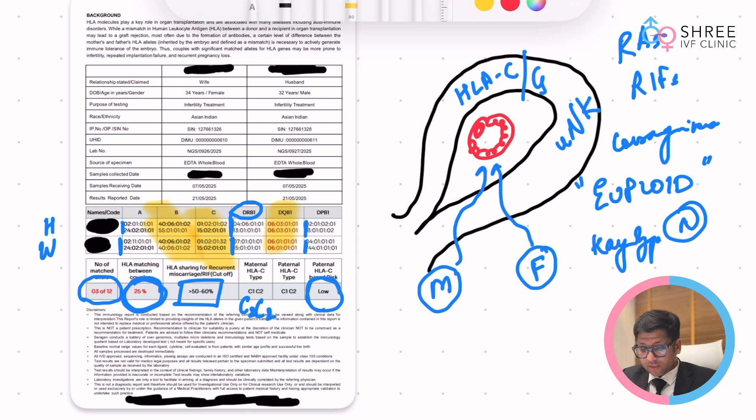Very important for you to understand this. As I told, this is an expensive test. Every day we will have consultations regarding the HLA typing report. What do you do when the report is abnormal? Let's assume instead of 25% this was 50% - then what would we have done?